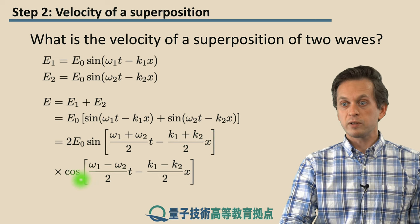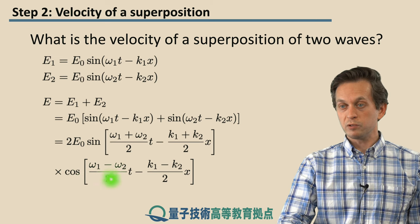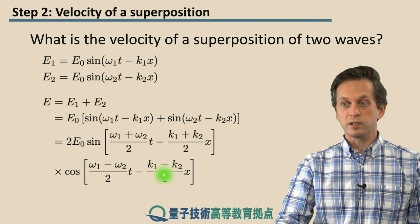And for the cos signal, we take the difference of the angular frequencies ω1 and ω2, and the wave numbers k1 and k2.